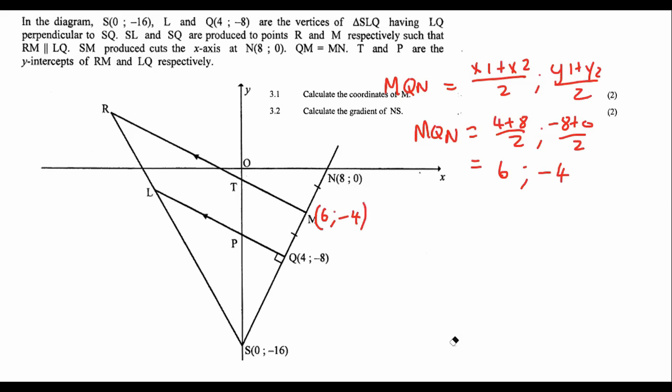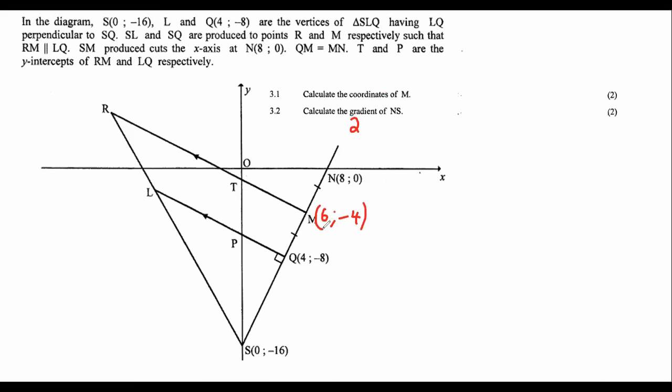Calculate the gradient of NS. I'm not going to calculate the gradient of NS — it's a waste of time. The answer you should get will be 2. You guys know how to do this by now, so that's just an easy question. There are probably more difficult questions coming up. The coordinate there is (6, −4) and the gradient of this line is 2.